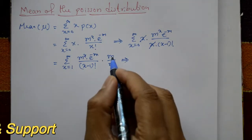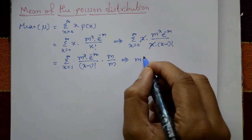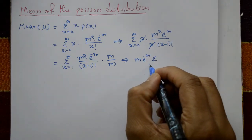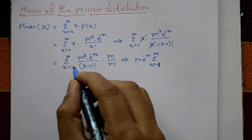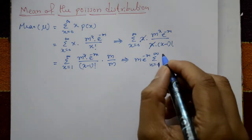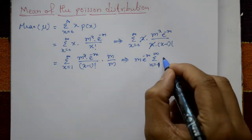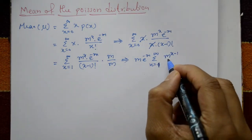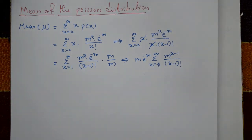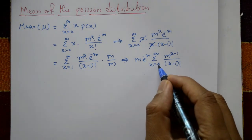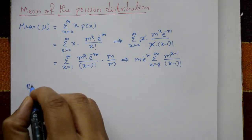Multiplying and dividing by m, we factor out m times e raised to minus m outside the summation. The summation from x equals 1 to infinity becomes m raised to (x minus 1) divided by (x minus 1) factorial, after shifting m into the numerator.